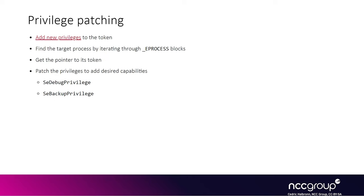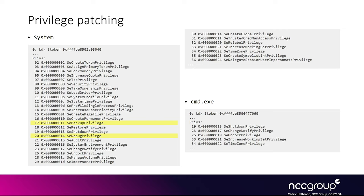The last method for data-only privilege escalation is to modify the actual token itself to give it all privileges, which lets your process access other processes' memory. Adding new privileges is just a matter of adjusting a bitmap in the token. Typically you would add SeDebugPrivilege so you can read other processes' memory like lsass, dump hashes or credentials, and pivot to other systems. A typical cmd.exe is missing powerful privileges like SeDebugPrivilege, and you could patch this if wanted, but in practice patching the actual token pointer is generally enough.